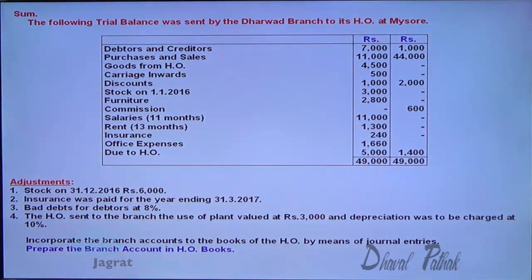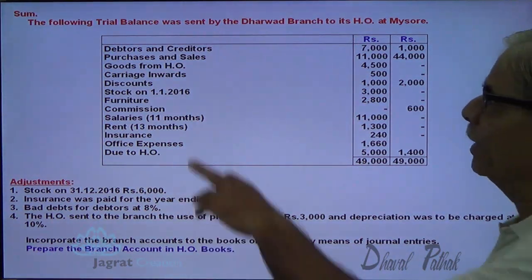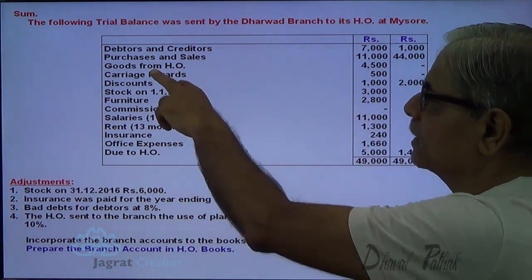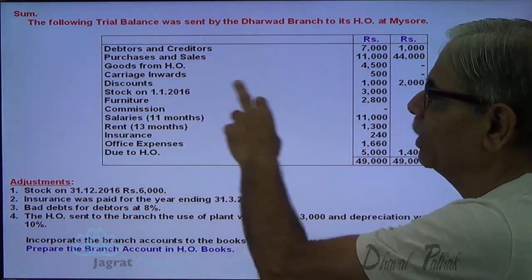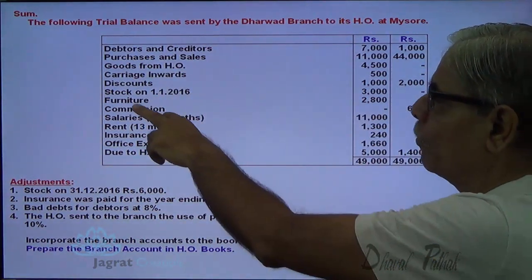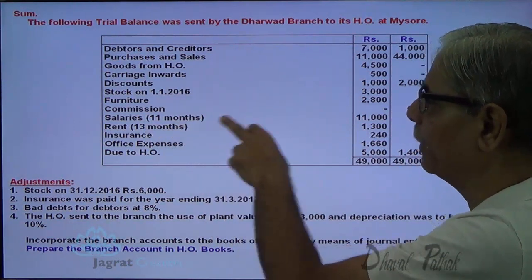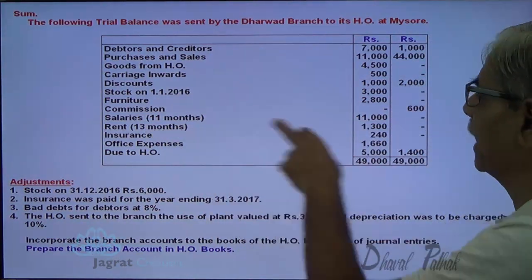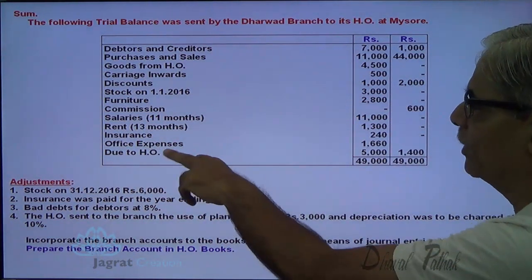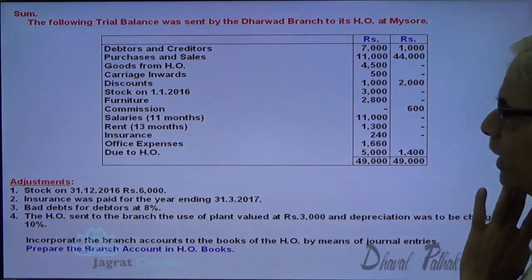The following is a trial balance sent by Dharvard branch to the head office at Mysore. It includes: debtors, creditors, purchases and sales, goods from HO, carriage inward, discount, opening stock, furniture, commission, salary paid for 11 months, rent for 13 months (1,300), insurance, and office expenses due to HO.